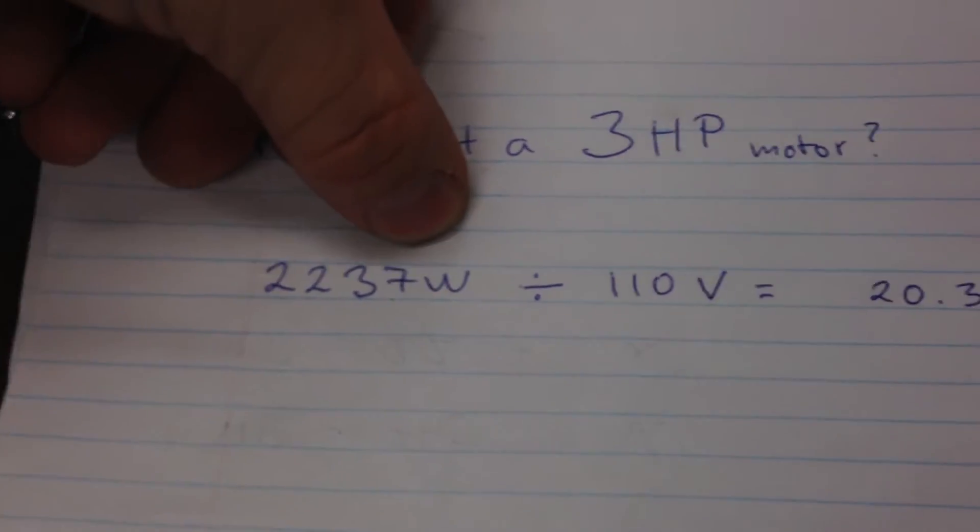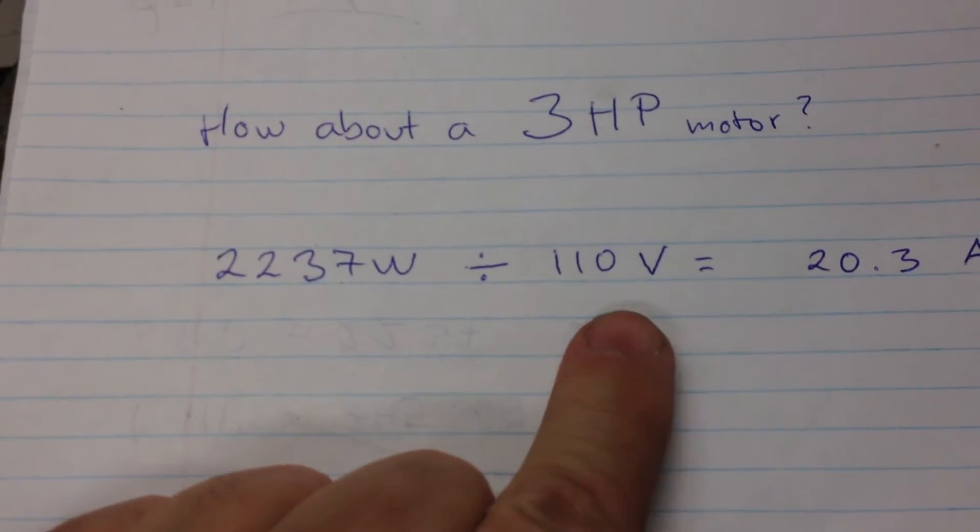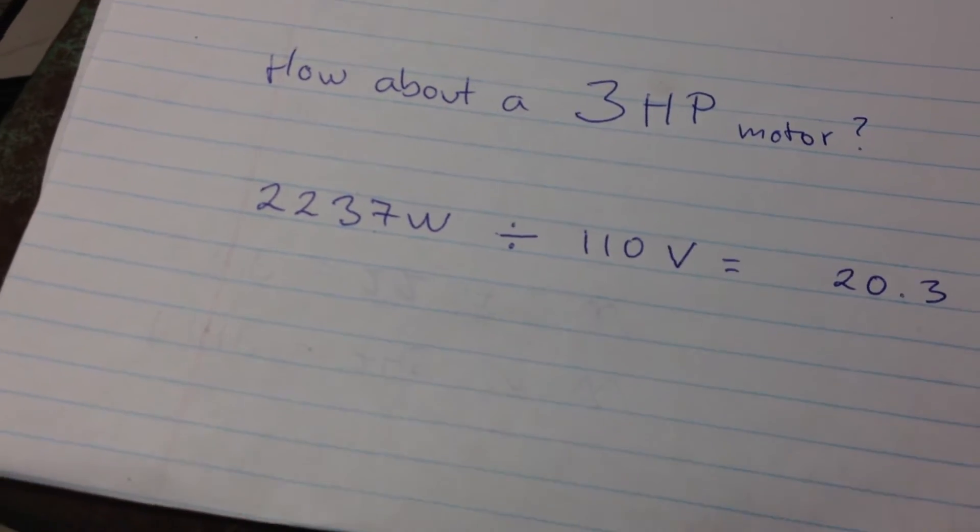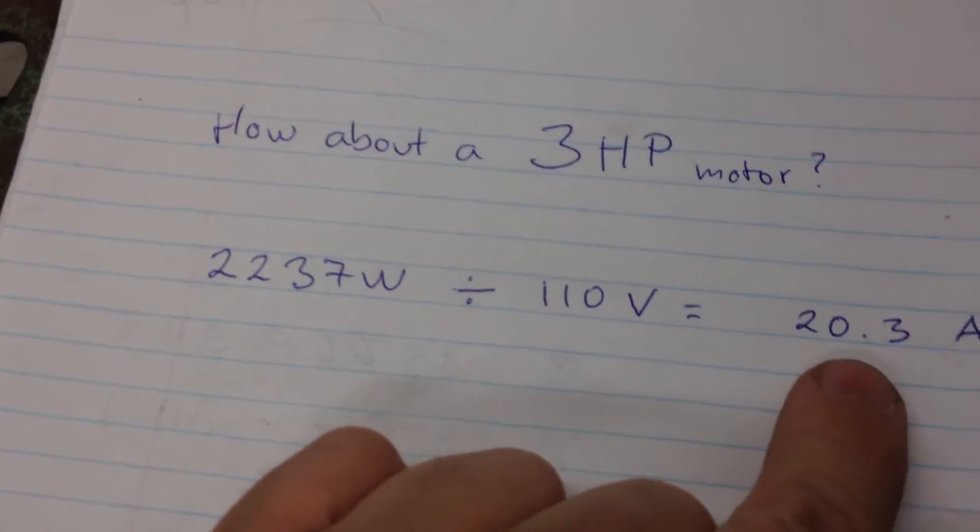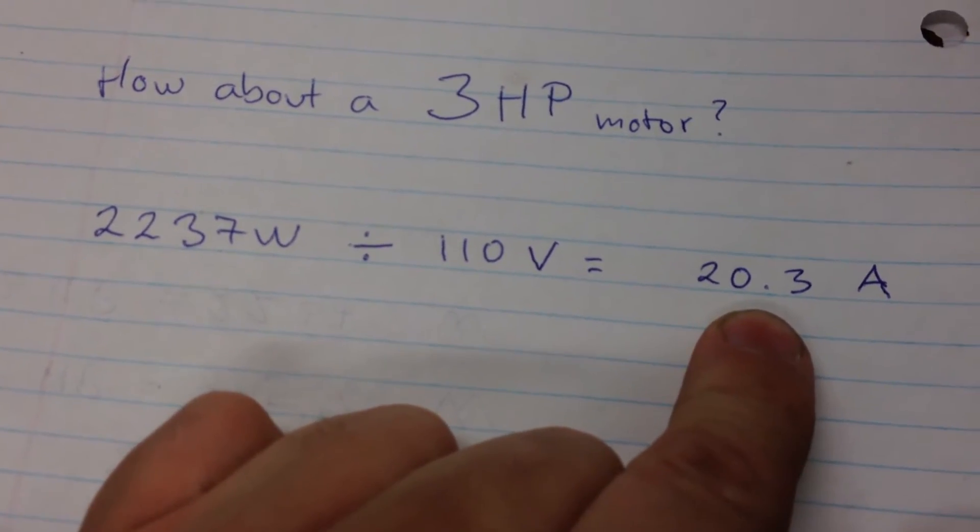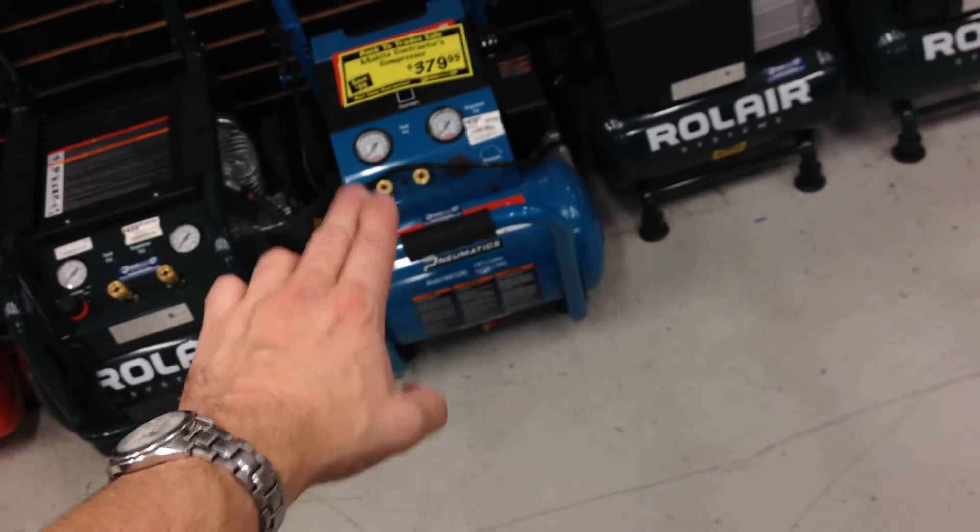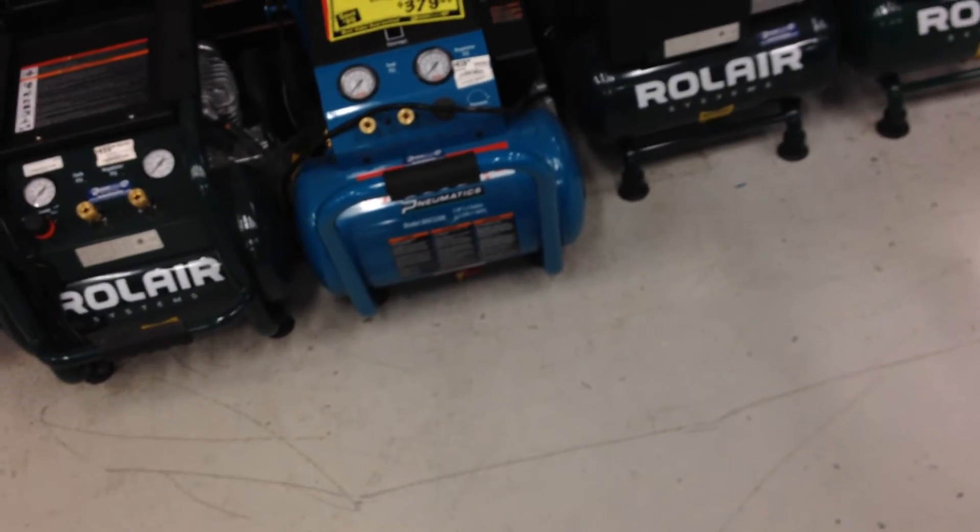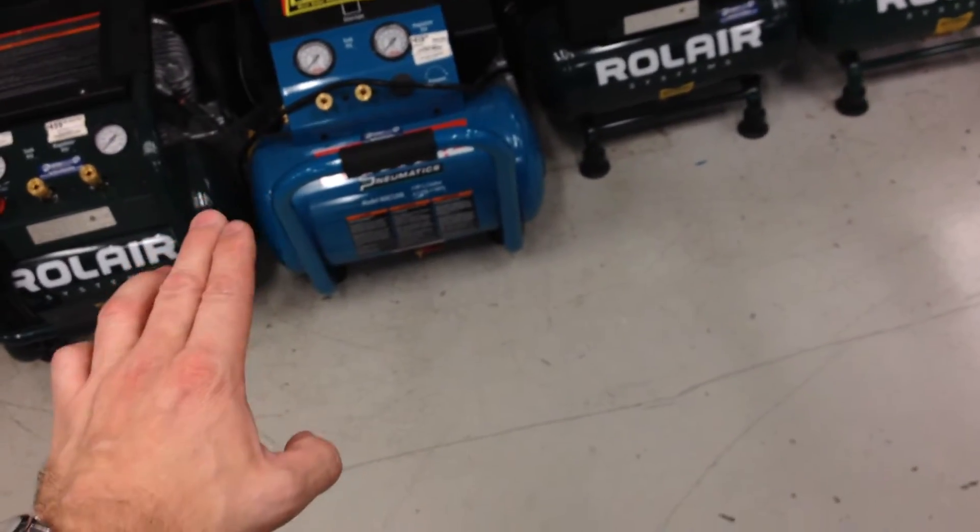That's going to give you 20.3 amps. 20.3 amps is not 15 amps. There's no way you can plug in that product if it really is running on a three horsepower motor to a 15 amp circuit and not trip the breaker.